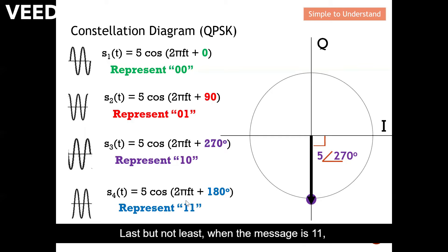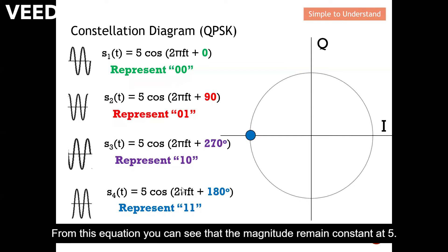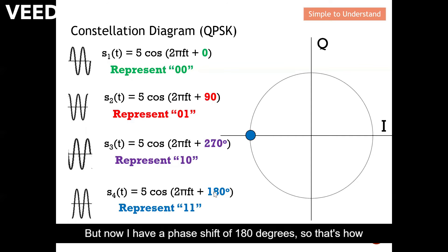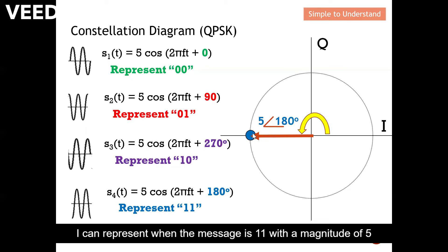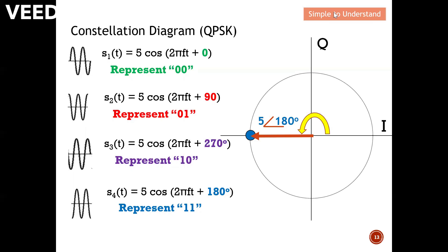Last but not least, when the message is 11, I indicate it with the blue dot. The magnitude remains constant at 5, but now with a phase shift of 180 degrees. That's how I represent message 11 in QPSK. With this, I'd like to end my video. Please like and subscribe. Thank you.